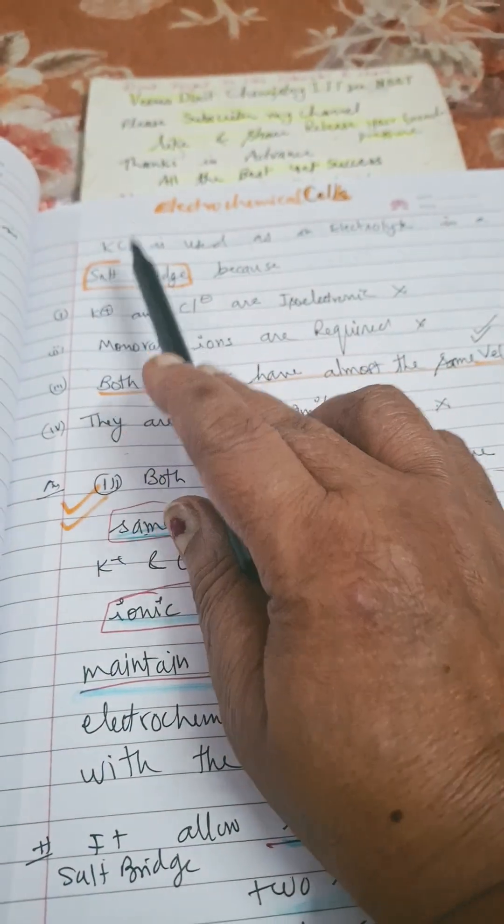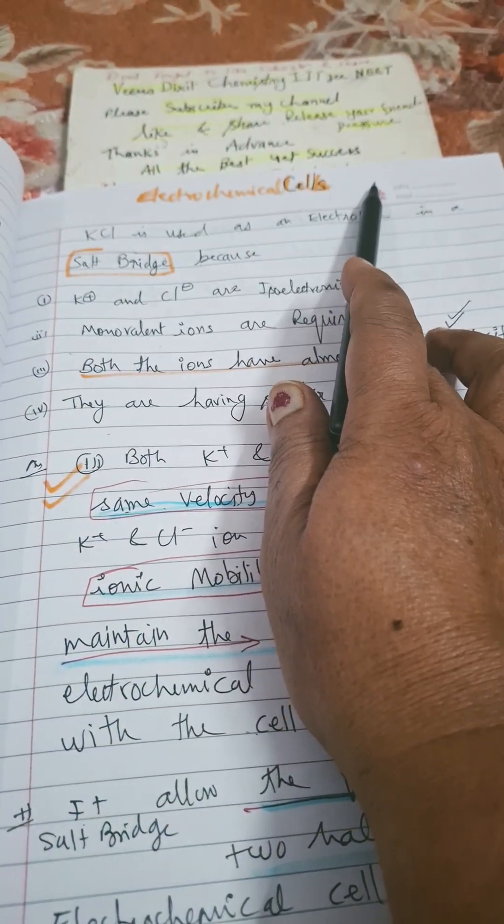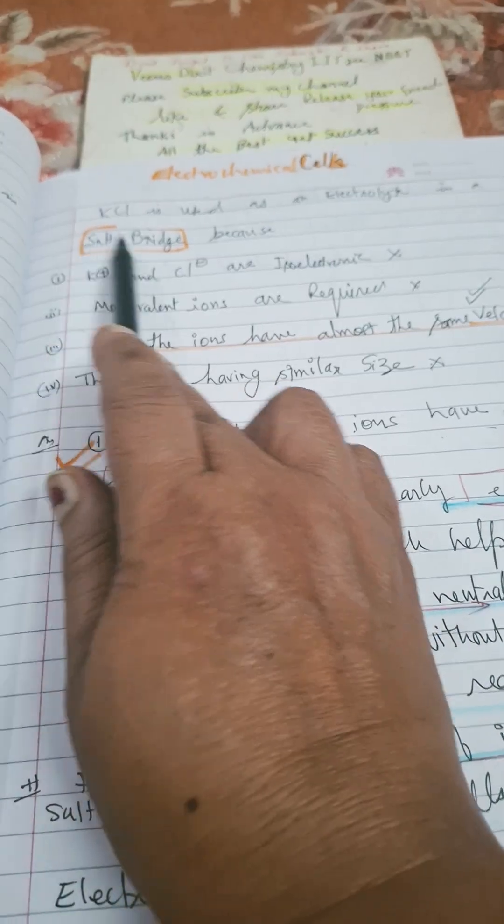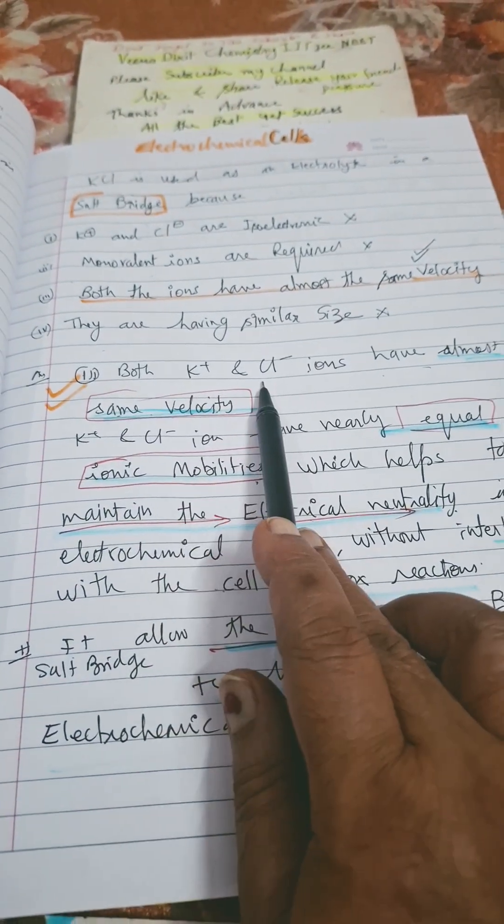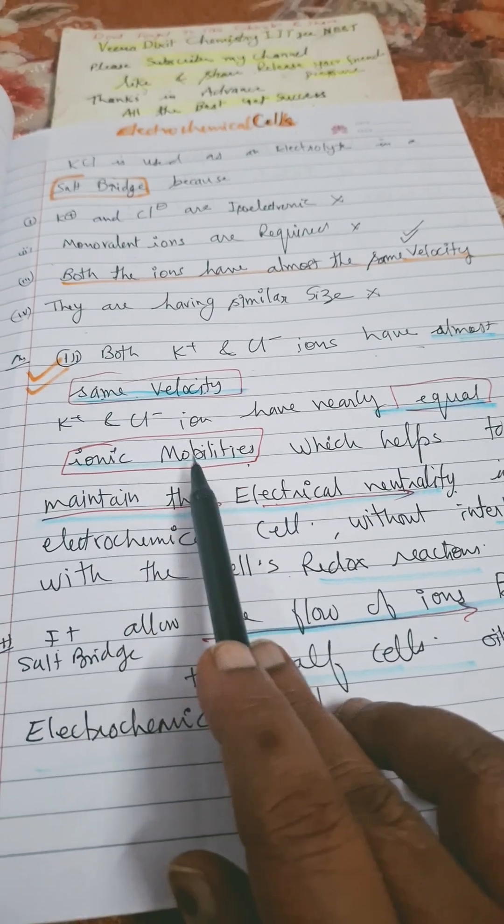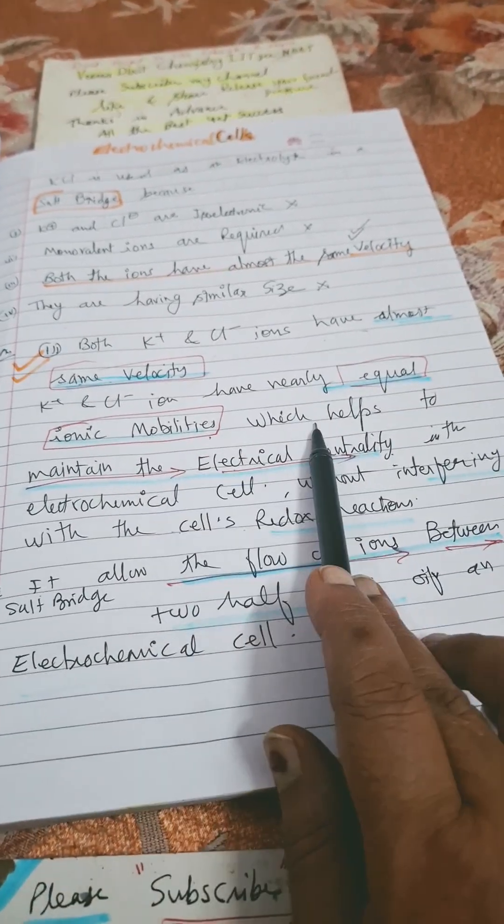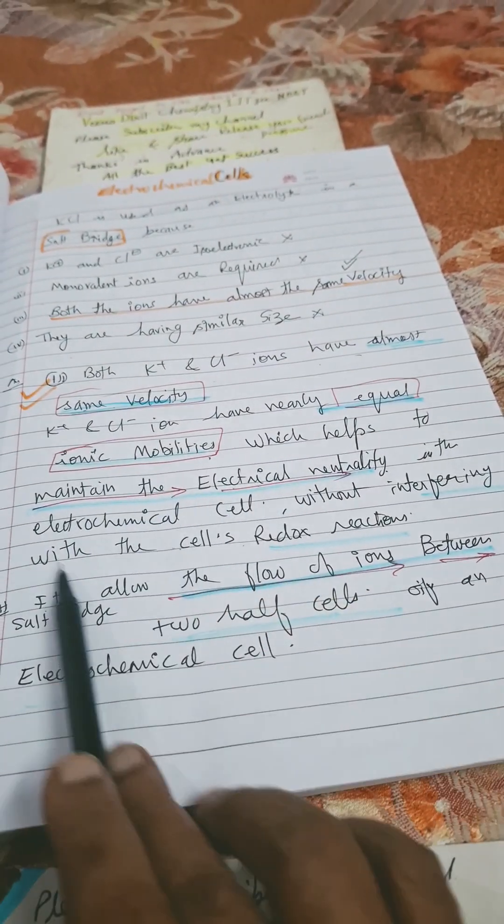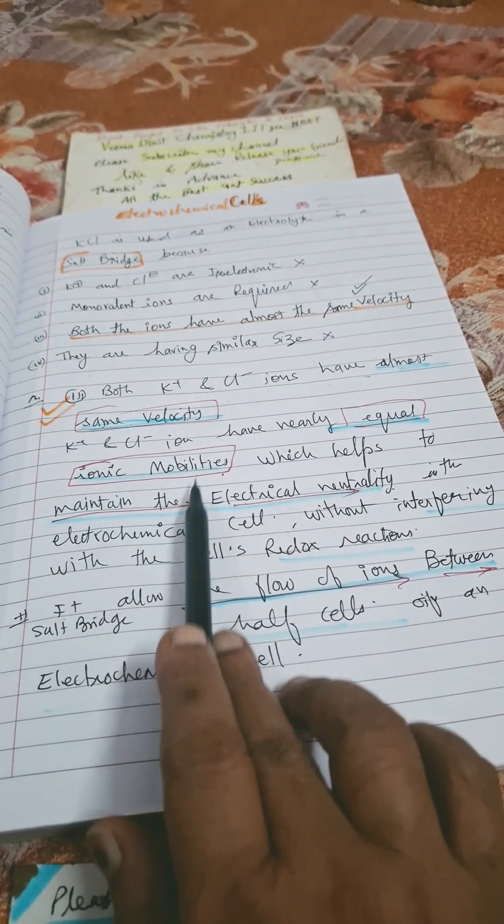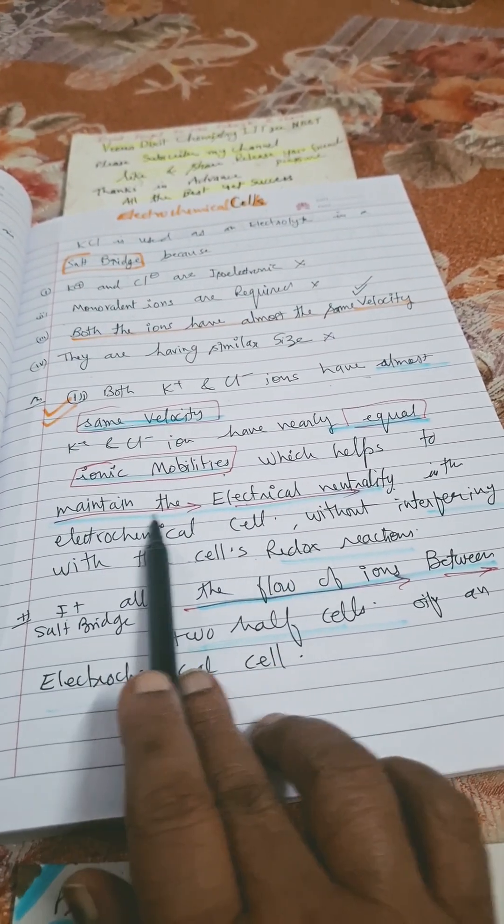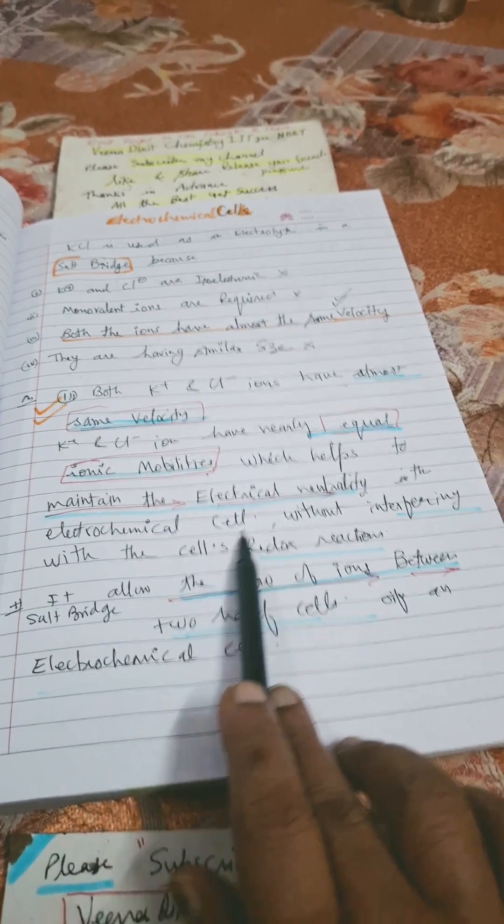Now I will tell you why do we use the salt bridge in the electrochemical cell. Because the ionic mobility of K+ and Cl-, both of them have the ionic mobility almost same. The flow of electrons and ions keeps going, so the ionic neutrality is maintained in the electrochemical cell.